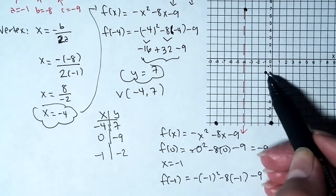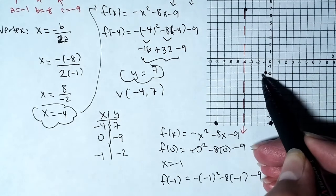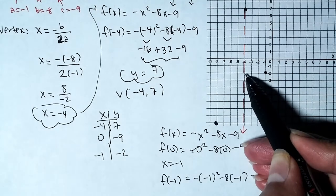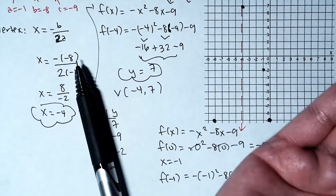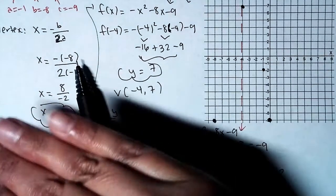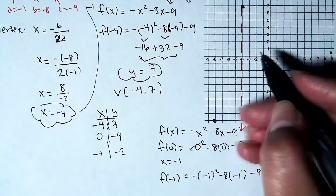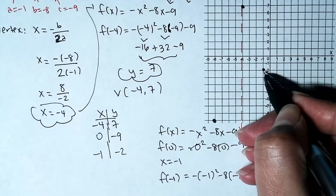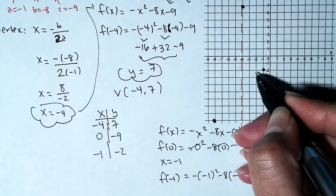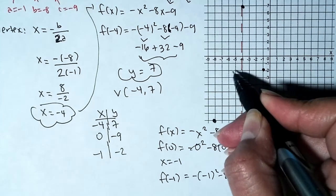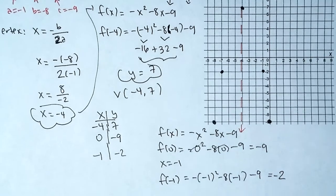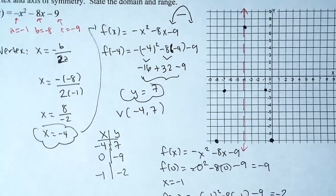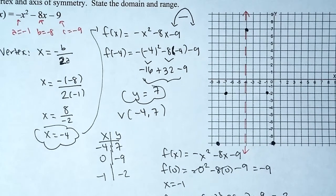We now have four points. Let's reflect (negative 1, negative 2) about the axis of symmetry to get our fifth and final point. This point is three units away from the axis, so we reflect three units to the other side — one, two, three — right there. Connecting those points, we definitely have a parabola that opens down.